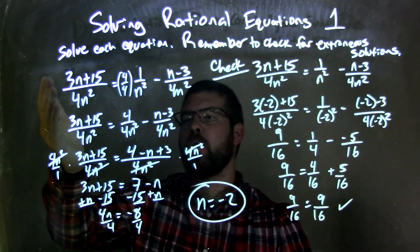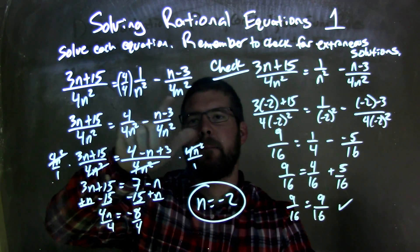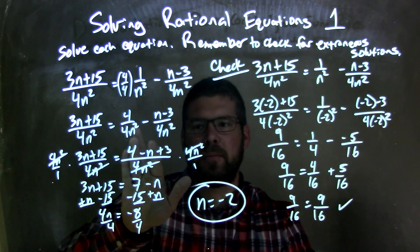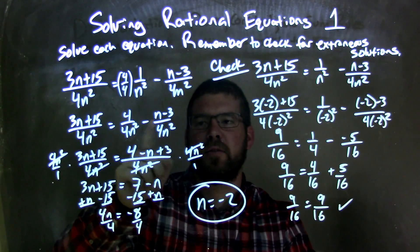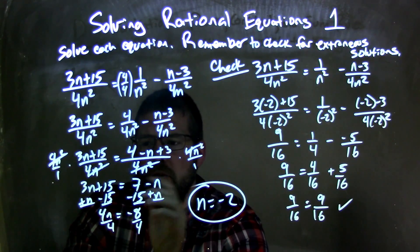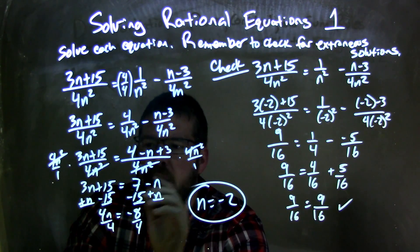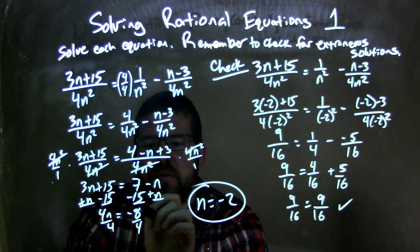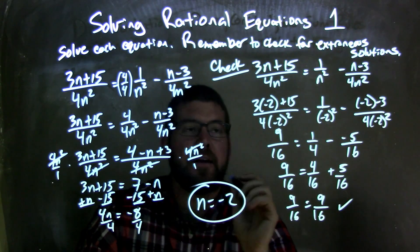So let's recap. We're given our original equation, and the key part is that these weren't the same base, so I had to rewrite this to be 4 over 4n squared so it had the same base so that I can combine them together. In doing so, I had 4 minus n plus 3, distributing the minus sign. Then I multiplied both sides by 4n squared, eliminated it on both sides, giving me 3n plus 15 on the left, equals 7 minus n on the right. I then added n to both sides, subtracted 15 from both sides, giving me 4n equals negative 8, divided both sides by 4, and got n equals negative 2.